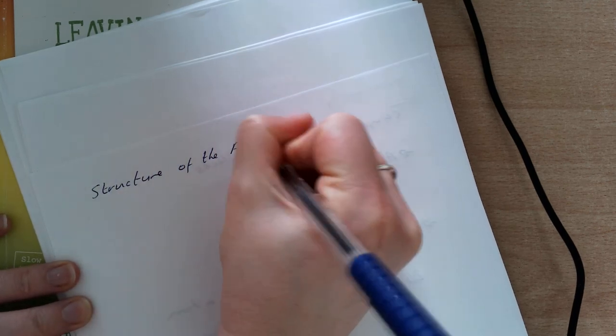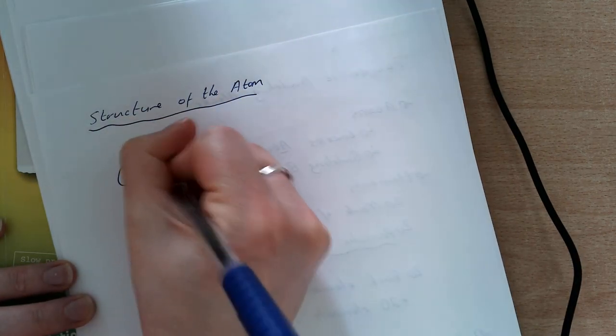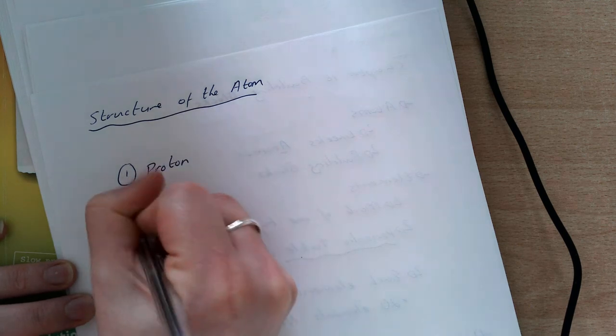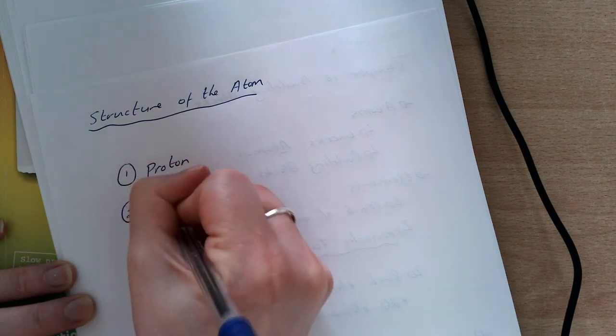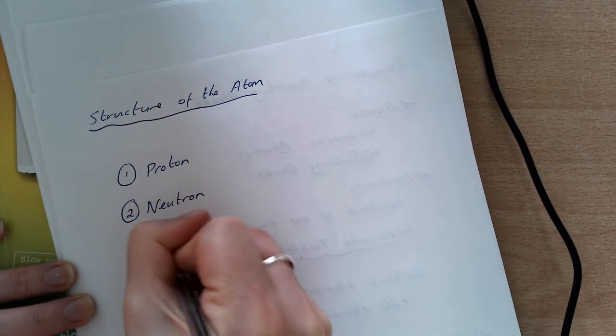In every single atom I have three particles. The first particle is a proton, the second is a neutron, and the third is an electron.